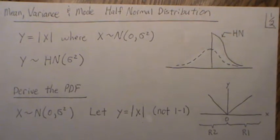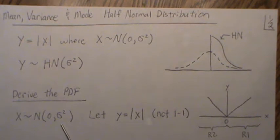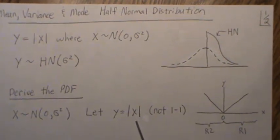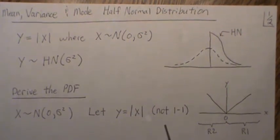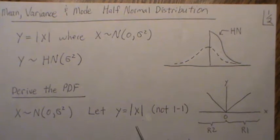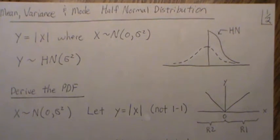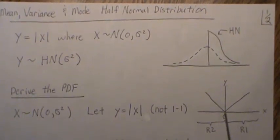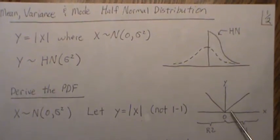Now let's first derive the PDF for this. So let's let x be normal zero sigma squared. Let y equal the absolute value of x. And note that absolute value is not a one-to-one function, so what we have to do is create regions where they are one-to-one, and then we end up adding those together. If we focus on region one and then region two, each of those regions is a one-to-one function from x to y.